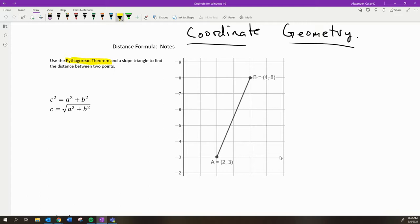So the distance formula really combines two ideas: the Pythagorean theorem, which is just a² + b² = c² in a right triangle. And it also takes the idea of slope.